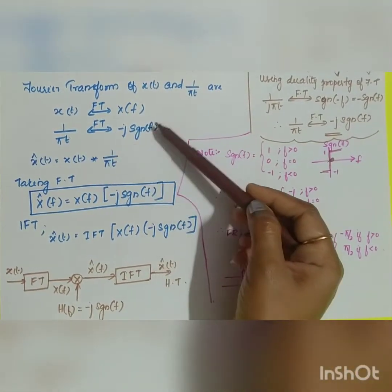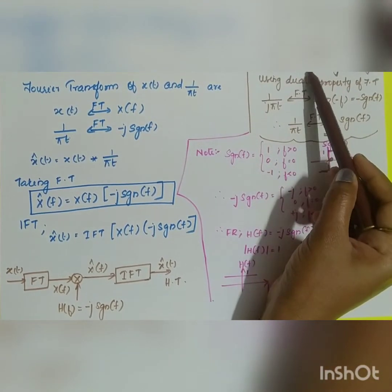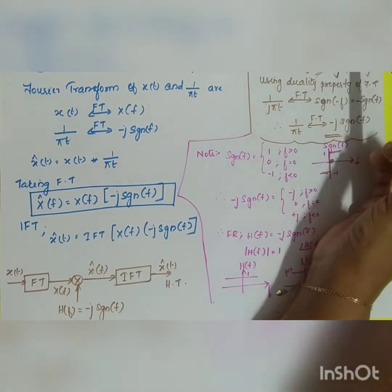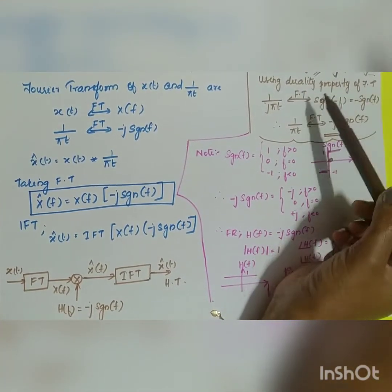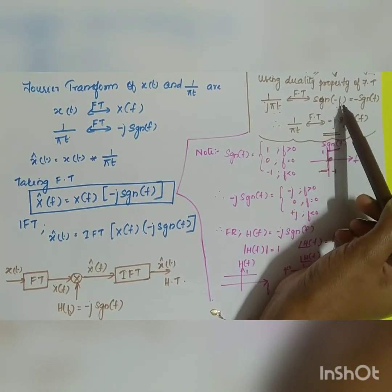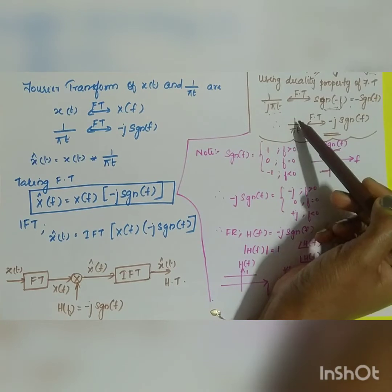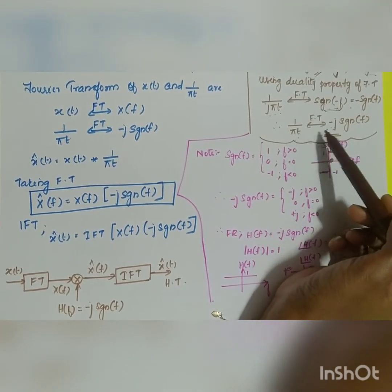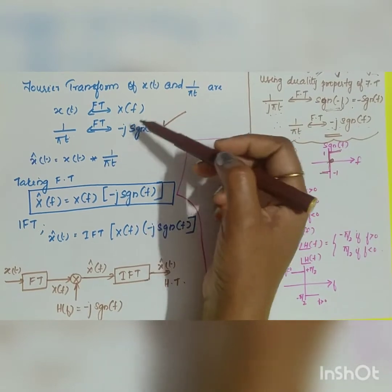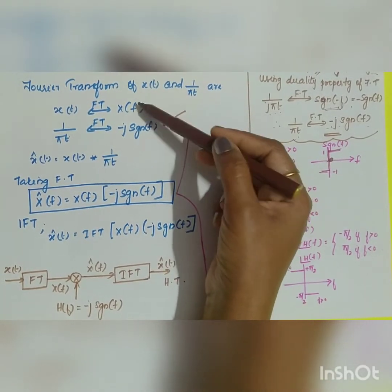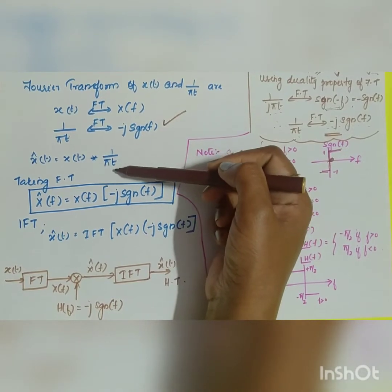To derive H(f) = −j·sgn(f): the Fourier transform of sgn(t) equals 2/jω. Substituting ω = 2πf gives 1/jπf. Using the duality property of the Fourier transform, 1/jπt transforms to sgn(−f). Since sgn is an odd function, this equals −sgn(f). Moving j to the other side, the Fourier transform of 1/πt equals −j·sgn(f). So in the time domain, x̂(t) = x(t) * (1/πt).